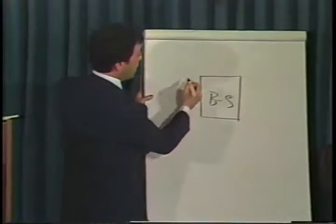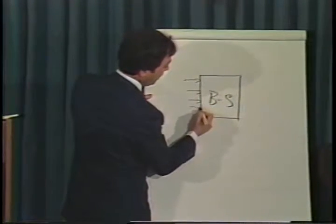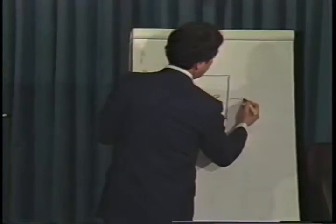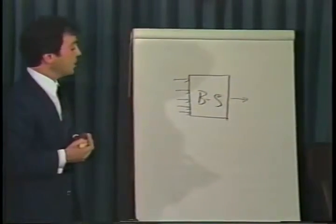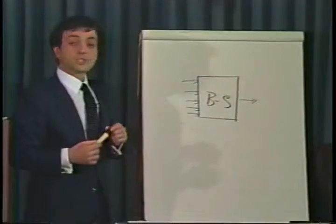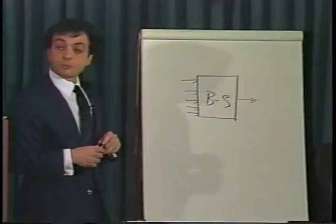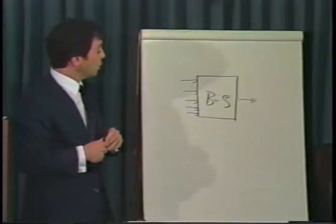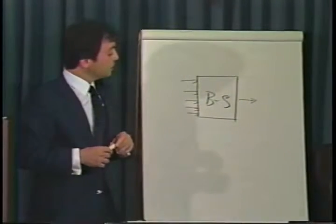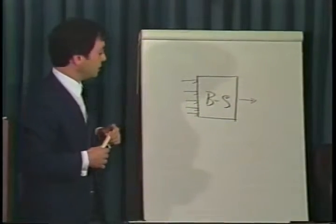That is to say, there are inputs that go into the Black-Scholes model, and there will be outputs that come out of the black box. You can think of this as your amplifier — into the amplifier goes the output of the record player, or the CD player, or the FM tuner, and out comes a signal that will drive the loudspeakers. You can think of the Black-Scholes model in that context.